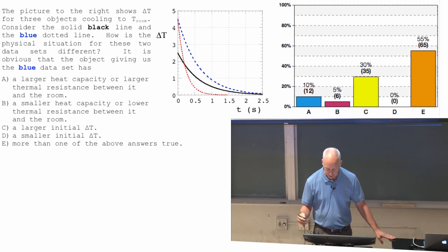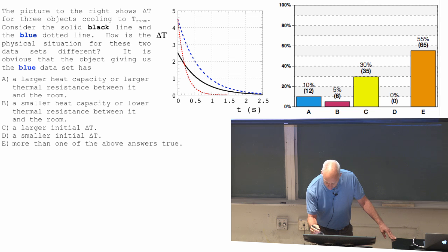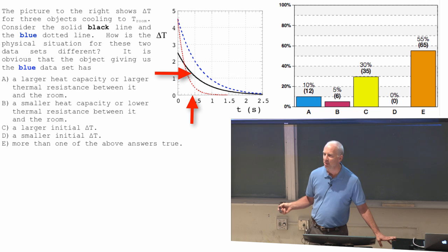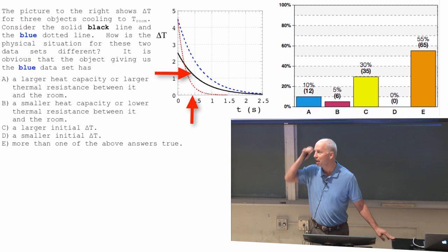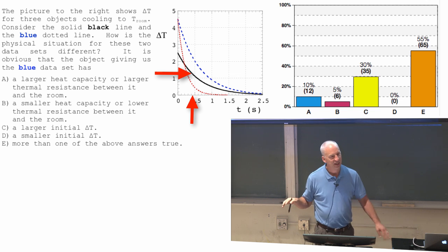What's the half life for the black one? Well it starts out at 2.5, and so half of that would be 1.25. And if I look at 1.25, I find out that it's got approximately the same half life. In other words, it's not obviously different.